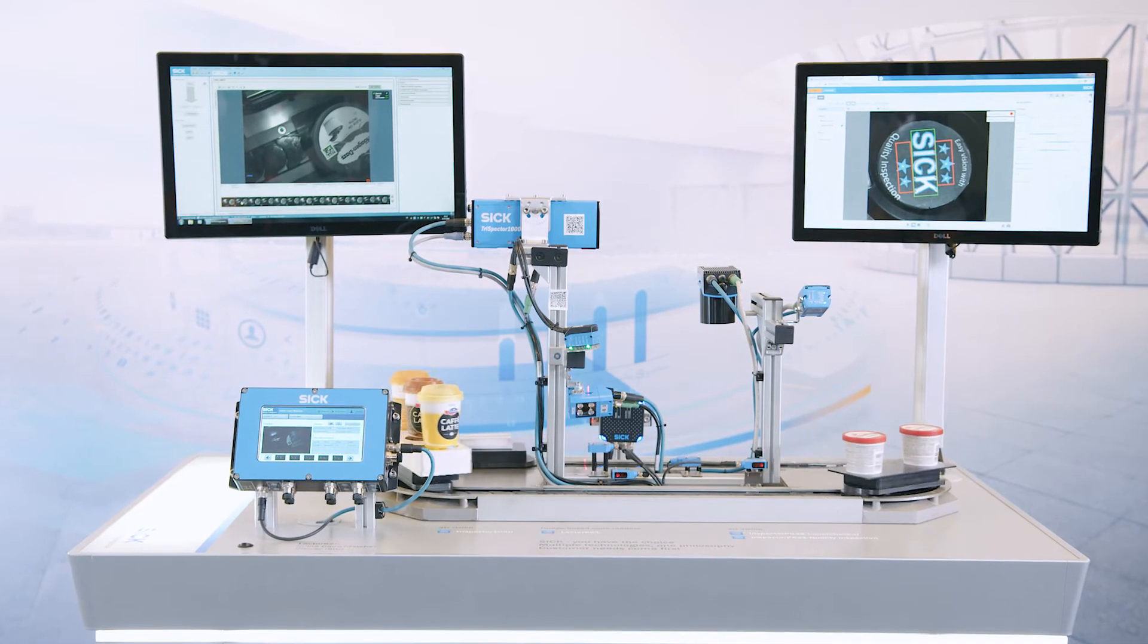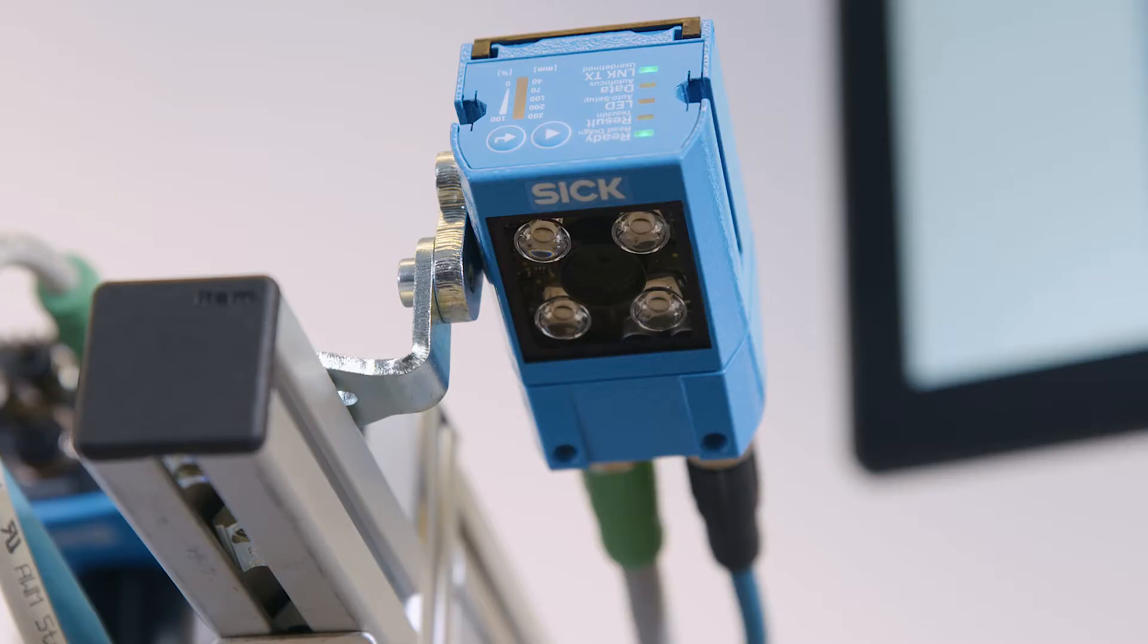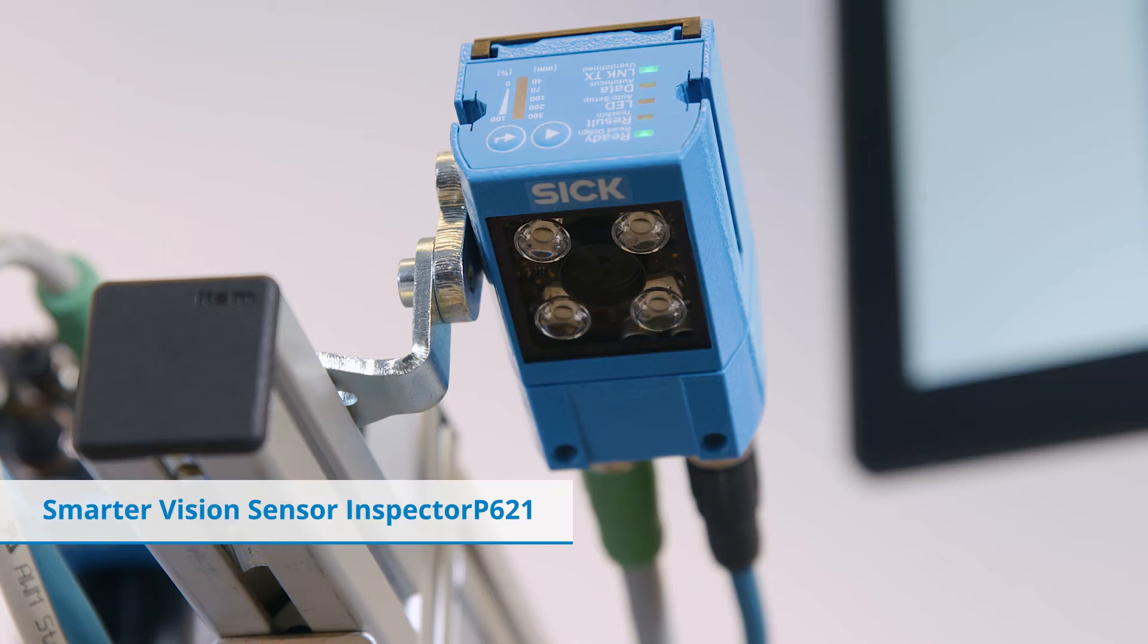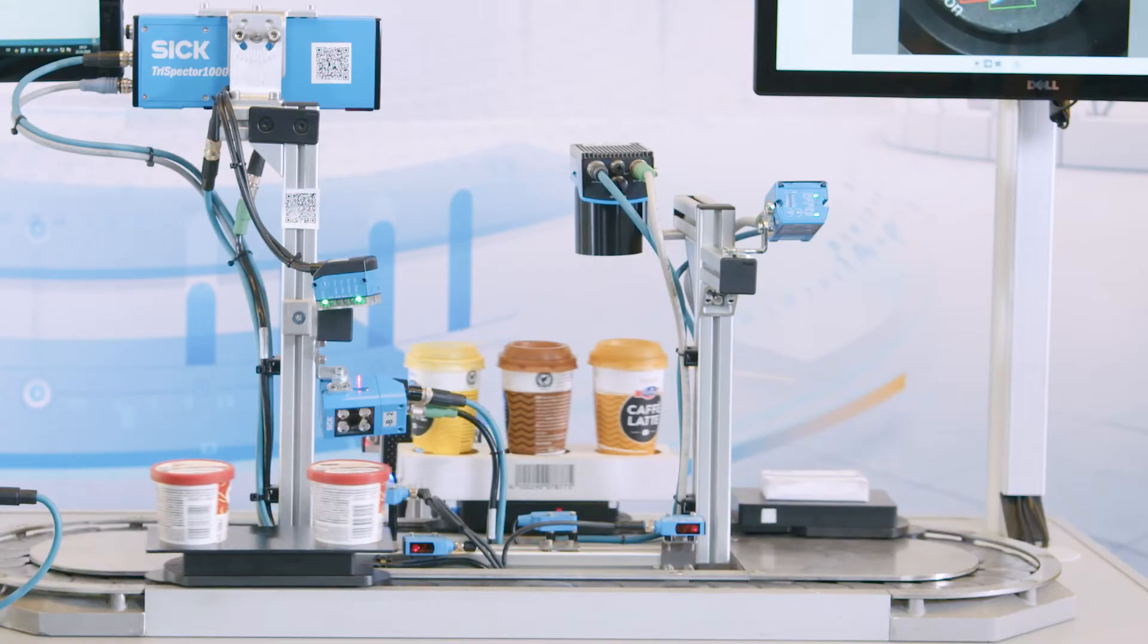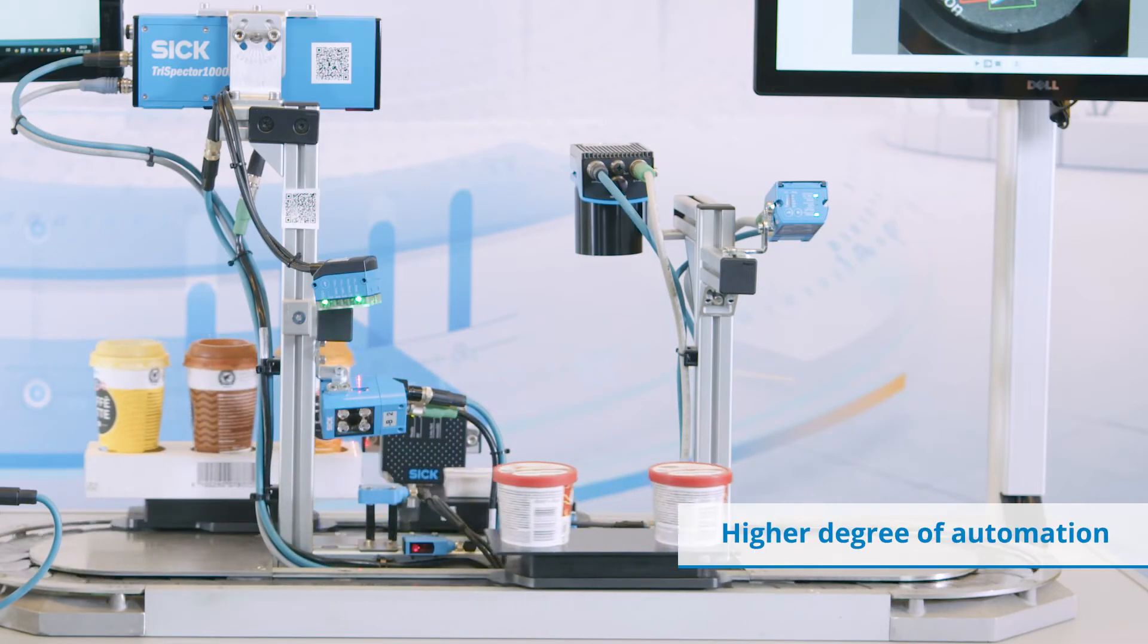By using a vision sensor, for example our new product, the Inspector P621, you can achieve an immediate increase in the level of automation through automated inspection and thereby lower manufacturing costs.